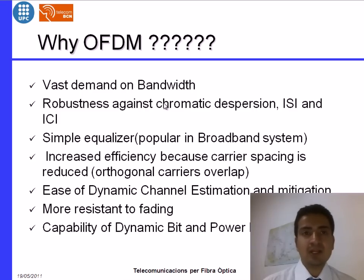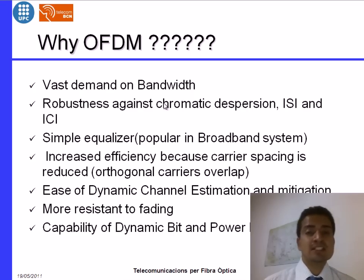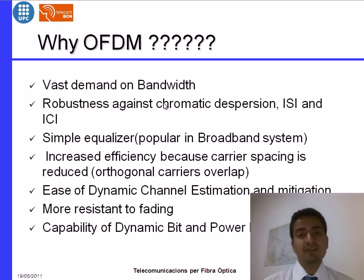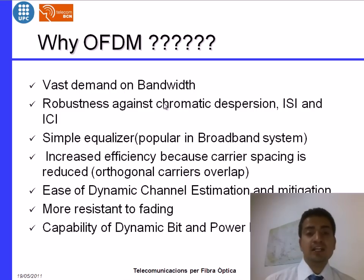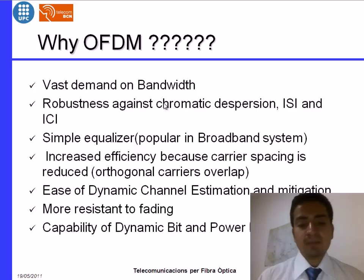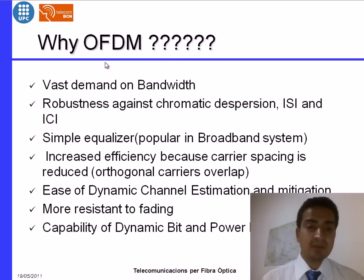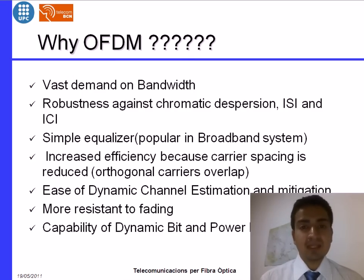This means that on the same spectrum, where previous multiplexing techniques transmitted 7 to 8 carriers, OFDM can transmit more. It also makes it easier to estimate the channel, is more resistant against fading, and is capable of dynamic bit and power loading. These are the main advantages of why we are using OFDM in optical communications.